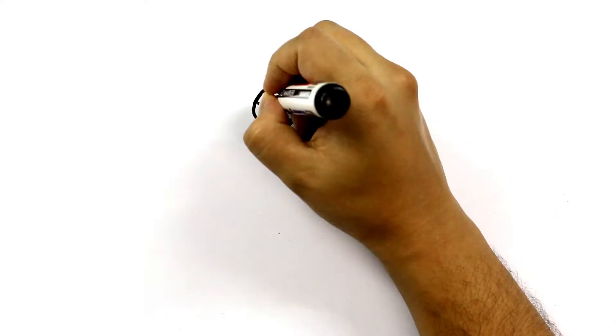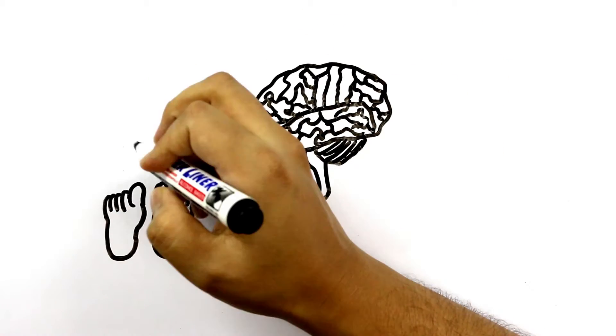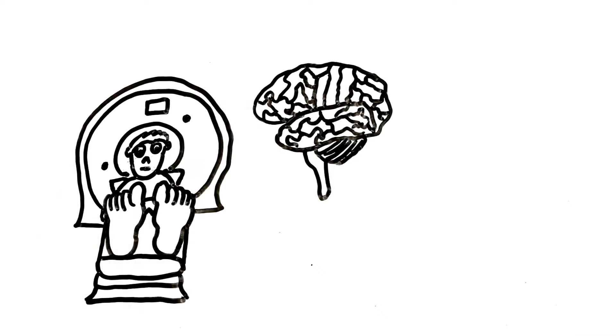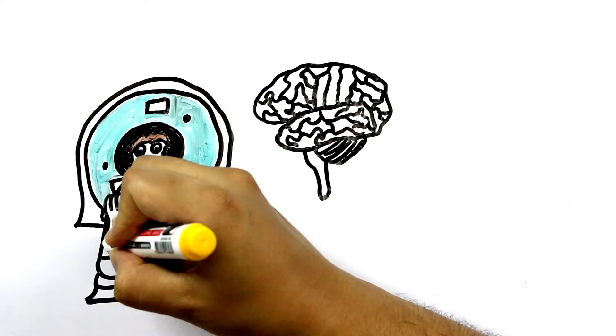But what is it about laughter that's so contagious? It all comes down to how our brain responds to the sound of giggles. In 2006, researchers used an fMRI scanner to measure how volunteers' brains responded to a variety of sounds.